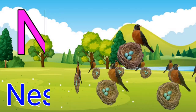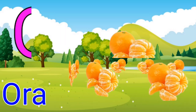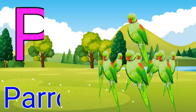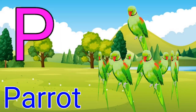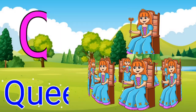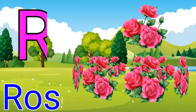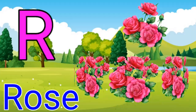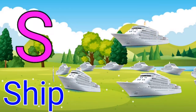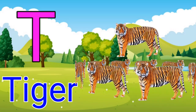N for nest. O for orange. P for parrot. Q for queen. R for rose. S for sheep. T for tiger.